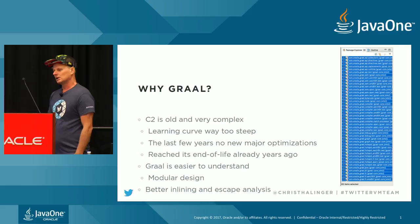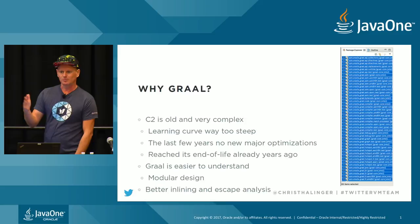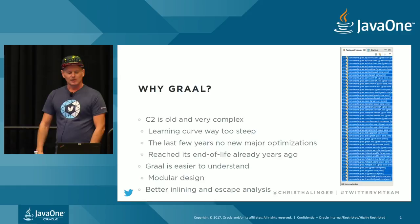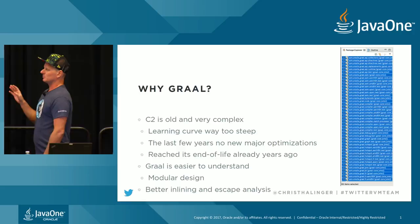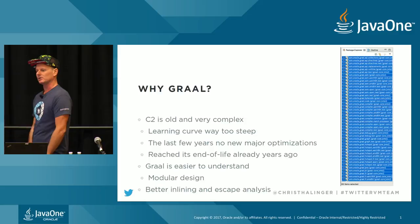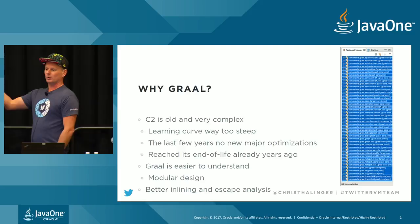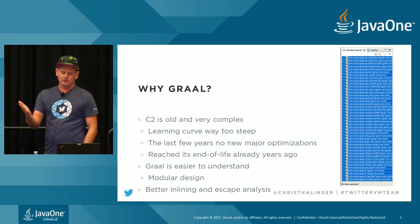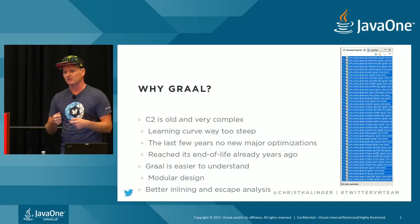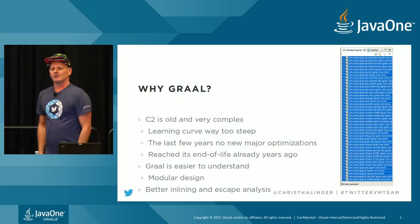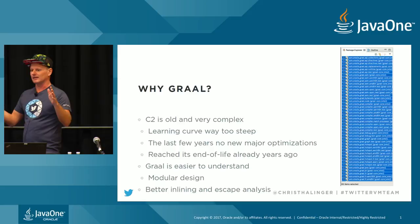So why Graal instead of C2? C2 is really old and very complex. Getting ramped up on C2 takes years, so it's very hard to hire people and very hard to train them. Sometimes they don't even stay long enough to get to a point where they're actually useful. That's why there were no major optimizations in C2 in the last couple of years — just small improvements, especially intrinsic improvements Intel did. No major re-doing of inlining or escape analysis — nothing like that.